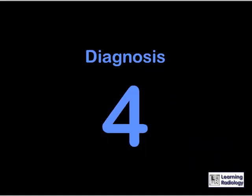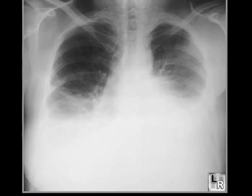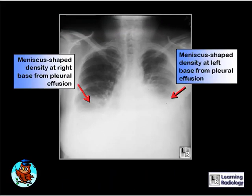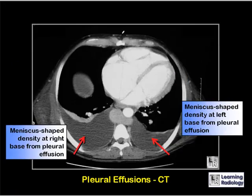Why is this 57-year-old female short of breath? There are large bilateral pleural effusions, with a meniscus-shaped density at the right base and one at the left base. In this case it was secondary to congestive heart failure. A CT scan of the chest shows bilateral meniscus-shaped effusions with lower density because they contain fluid, and there is compression atelectasis above the pleural effusion on the right side.